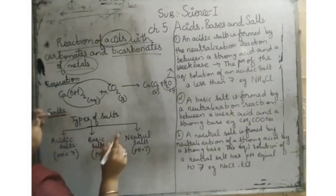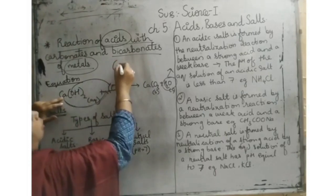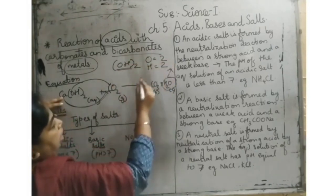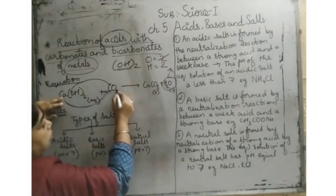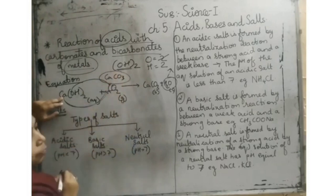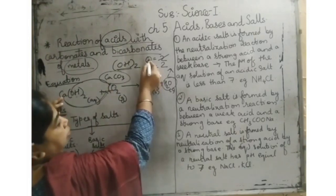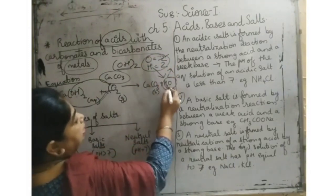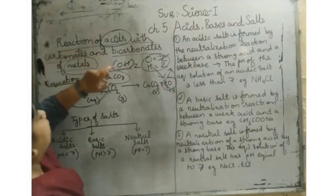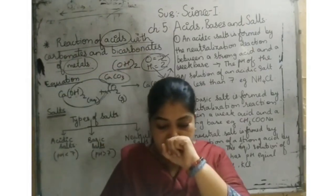Let me explain again. The OH₂ group has 2 oxygen and 2 hydrogen. Out of these 2, one oxygen goes to CO₂, making it CO₃. So we get CaCO₃ which is calcium carbonate. The remaining H₂ and one oxygen give us H₂O. In this way, this equation gets balanced — it is the reaction of an acid with carbonates and bicarbonates of metals. This part is on page number 68.